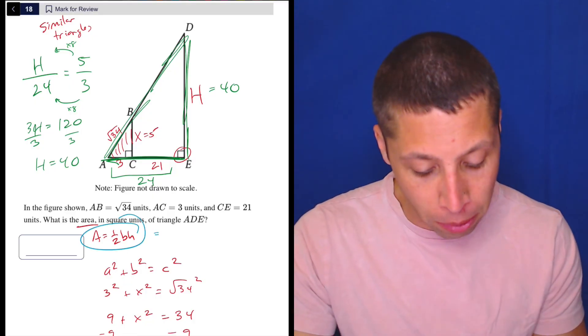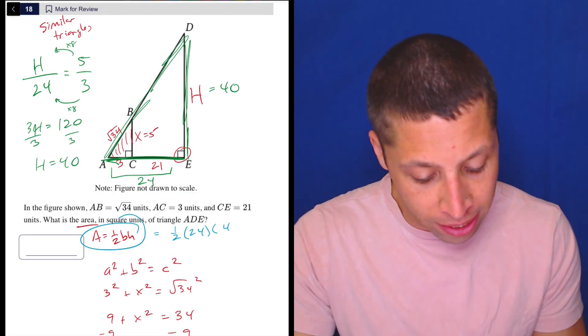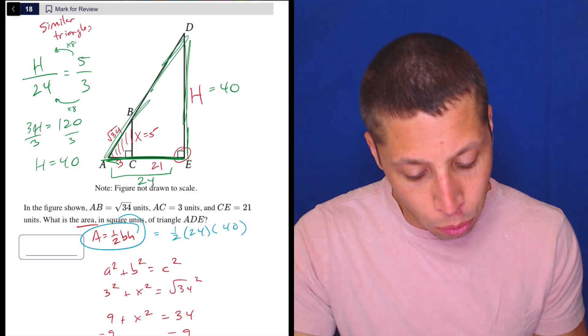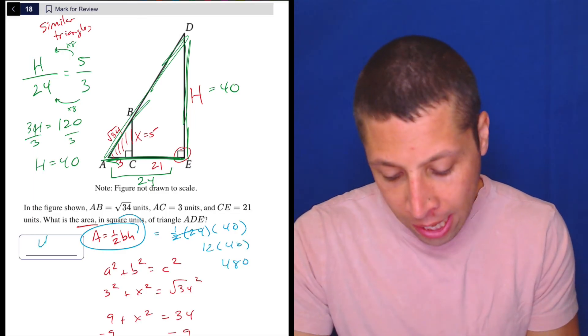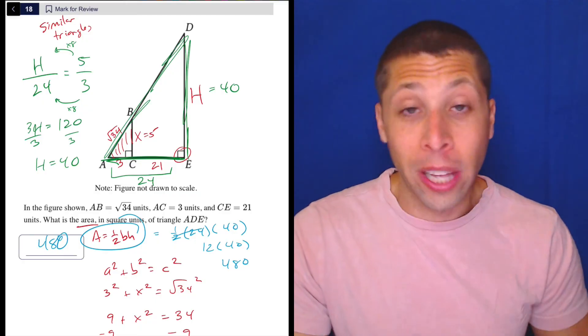But now that's really easy. It's just about plugging into the formula. So that's 1 half. The base is 24. The height is 40. So half of 24 is 12. So 12 times 40 is 480. And that's it. That's the whole answer.